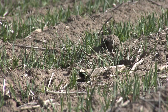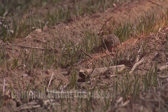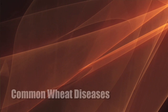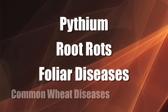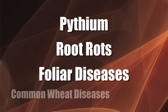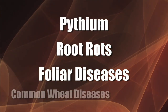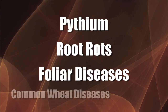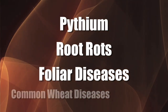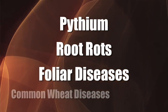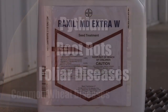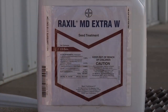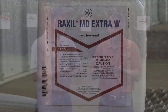When you talk about disease problems, you're going to have things like pythium and root rots, and you can also have foliar diseases. So how is a grower going to sort out what he's looking for? Is he going to pick Charter, or Raxel, or Dividend? What do you do — how do you know?